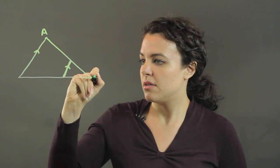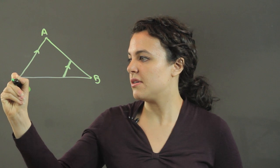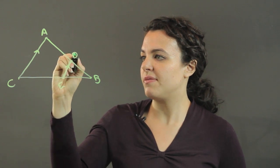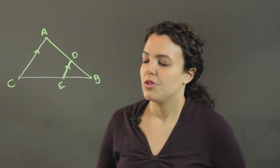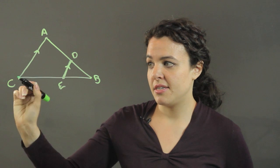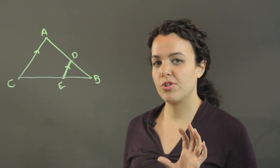Let me give my triangle some labels on the vertices here. And then here at the intersection points, we have D and E. So this line has split these sides into proportional parts.